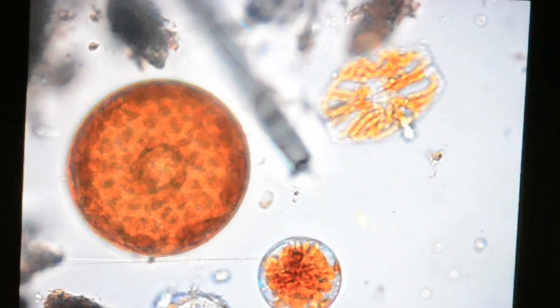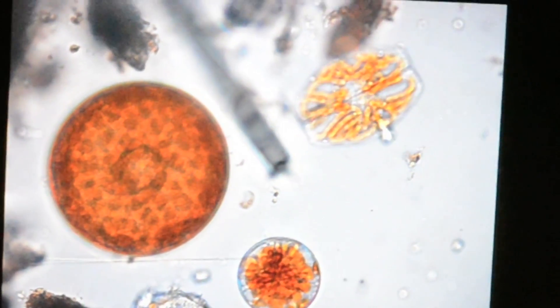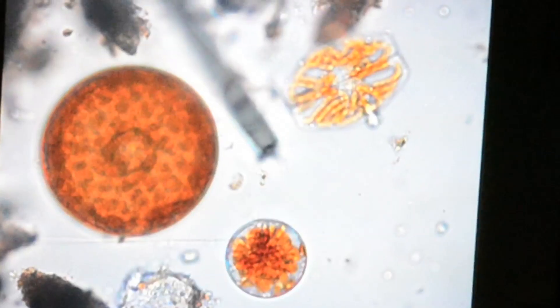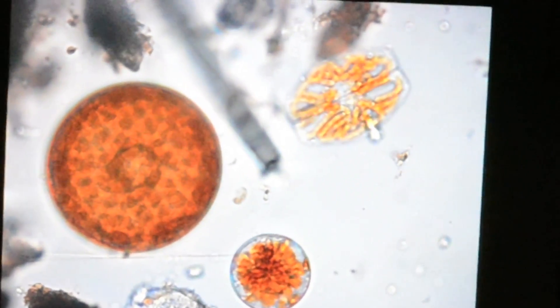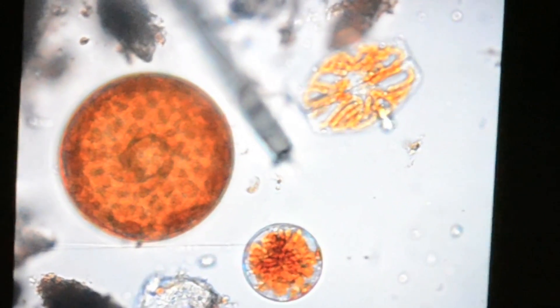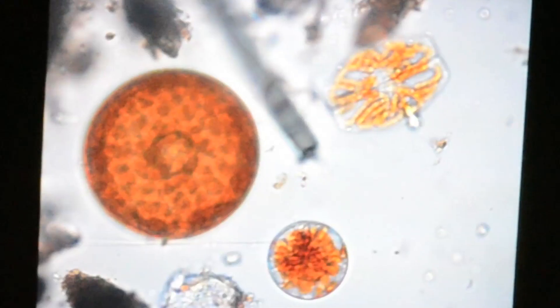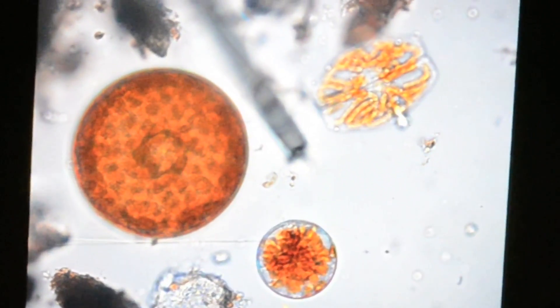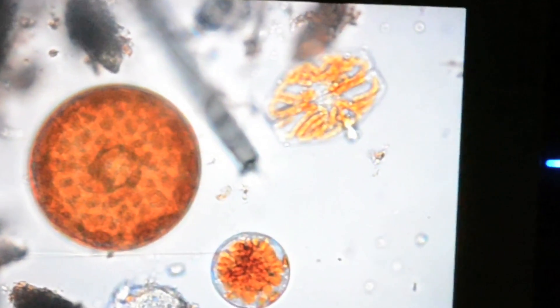As I go through, I'll see a lot of different species. Usually every day there's approximately five to ten that are very dominant. But in addition, I might see one cell of another ten. So between 20 and 25 different species are found in each sample.